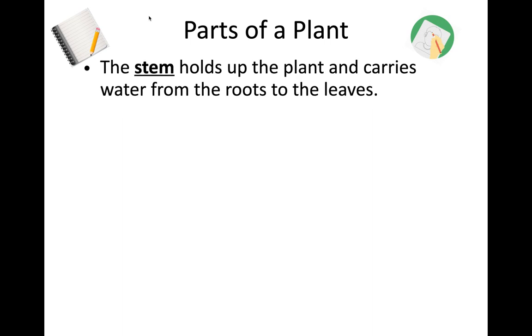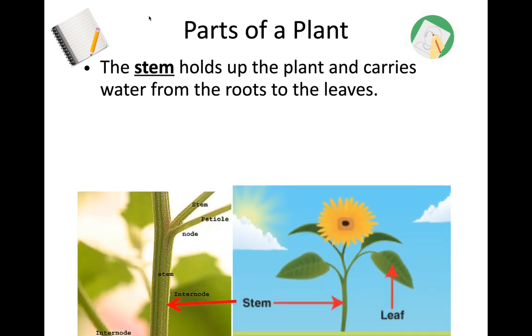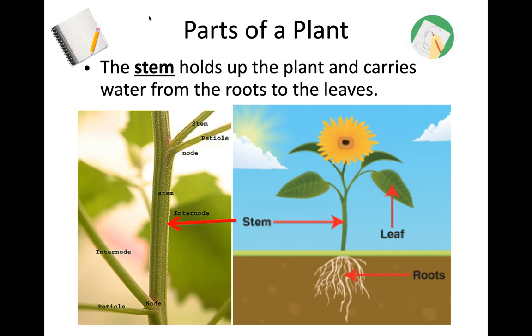Next we have the stem. The stem holds up the plant and carries water from the roots to the leaves. Here we have a picture of a stem and the flower, and then to the left we have another picture that further labels the different parts of the stem.